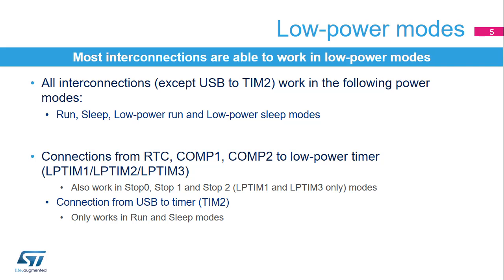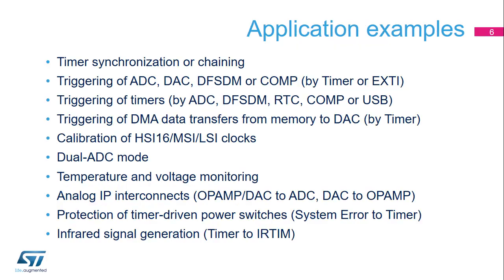The connections from the real-time clock or comparators to low-power timers can also be used in stop 0, stop 1, and stop 2 modes for low-power timer 1 and LP timer 3. The interconnect matrix is mostly used for synchronizing or chaining timers, for example allowing a master timer to reset or trigger a second slave timer.